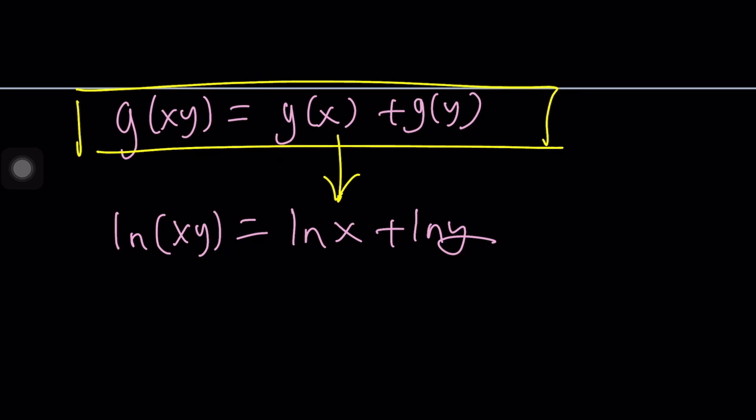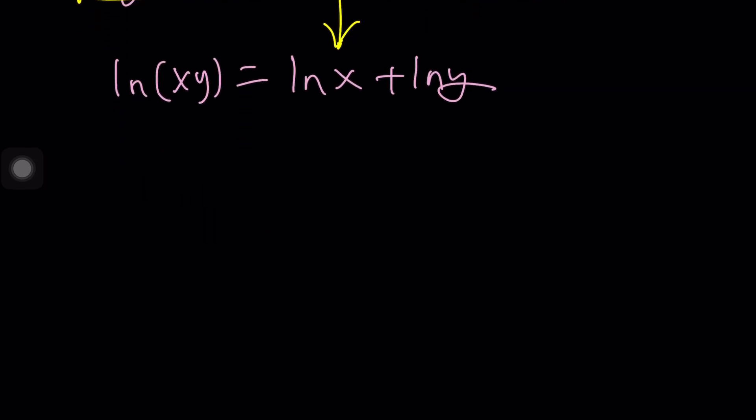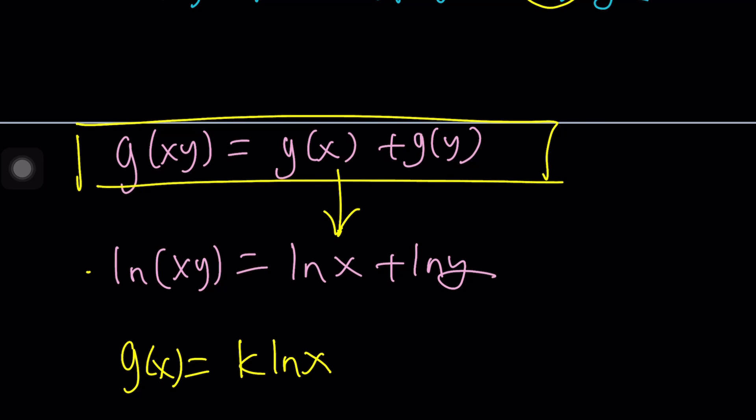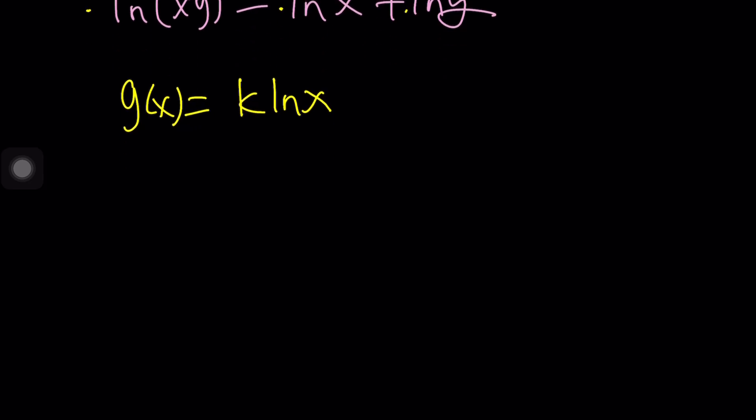Therefore, this functional equation has the following solution. But wait a minute. Does it have to be just ln x? Or can it be something else? And the answer is yes. It can be something else. Like, more generally, g of x can be k times ln x. Because when you introduce the constant on both sides, it's going to cancel out. Of course, k should not be zero. Then, you're going to be getting the zero function, which is not a good idea in this case. So, what does that mean? g of x is equal to k ln x.